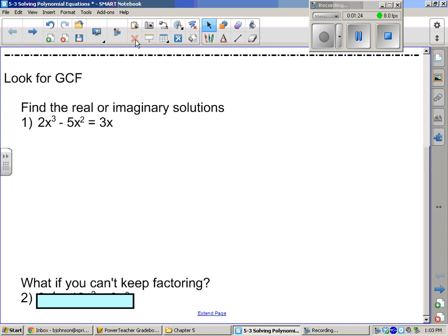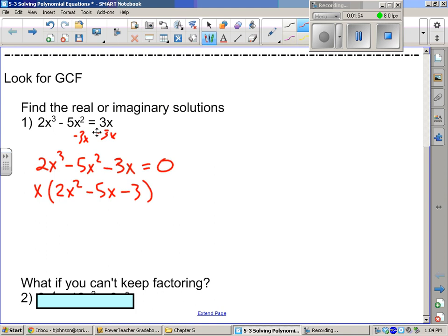Alright, first thing you always do is look for greatest common factor. First thing we do is make sure we set it equal to zero. So I'm going to subtract this 3x from both sides. Make sure I put it in standard form, putting the highest one first, and then go down from there. Something's wrong with my 3's today. Now, greatest common factor, I see every one of them has an x. No numbers are common, so we're just going to take the x out. So 2x² - 5x - 3.